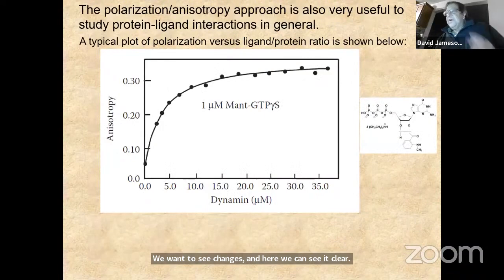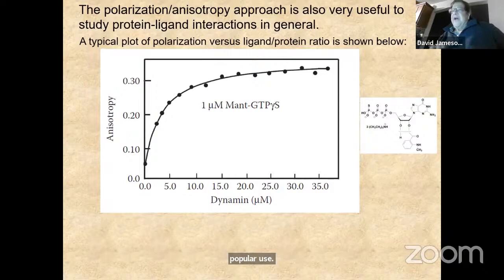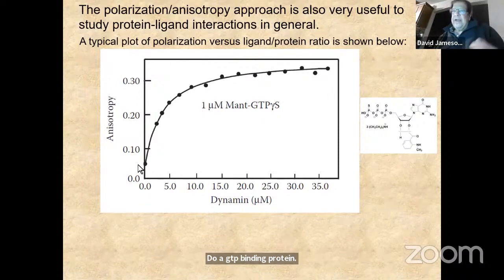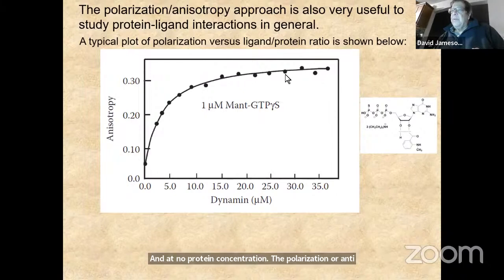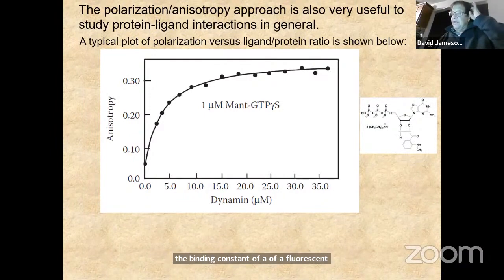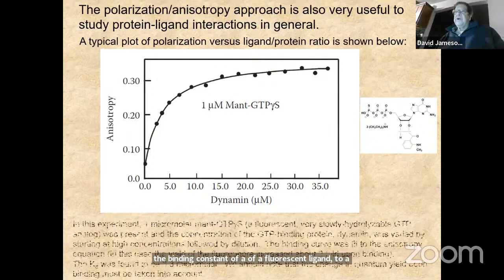Another very popular use is where we have a fluorescent GTP analog that binds to a GTP-binding protein. At zero protein concentration the polarization or anisotropy is low; as we add more and more protein, it goes up. This is a method to easily follow the binding constant of a fluorescent ligand to a protein — very popular, especially in clinical work.